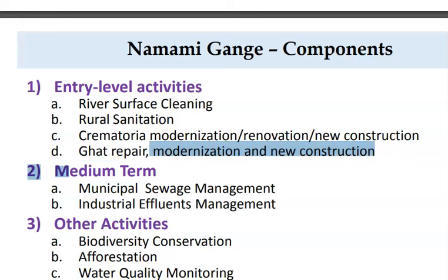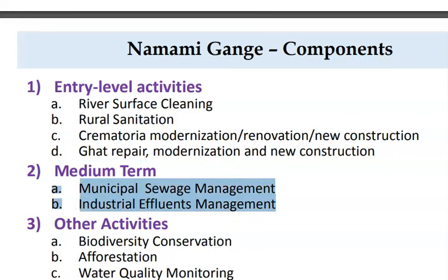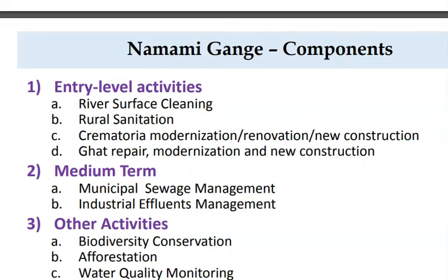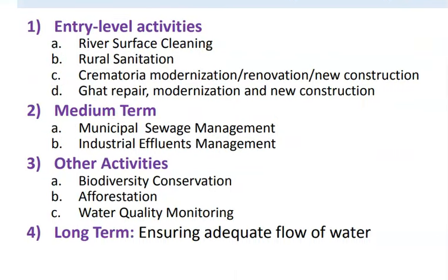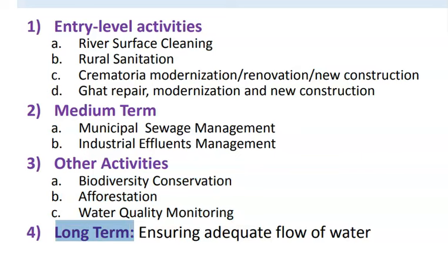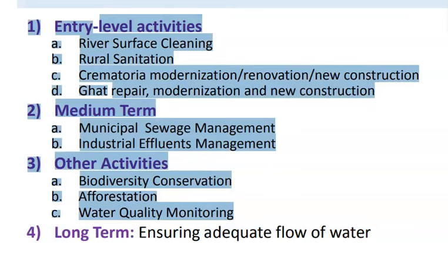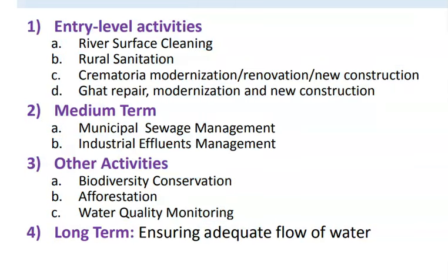The medium term component is municipal waste management and industrial effluent management, as sewage waste directly moves into rivers. Apart from river cleaning, the second main activity is biodiversity conservation, afforestation, and water quality monitoring. The long-term objective is ensuring adequate flow of water, which is only possible if all these activities are done properly.